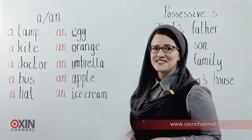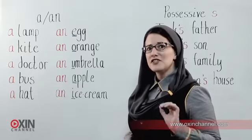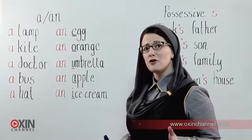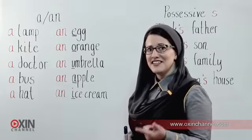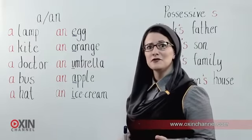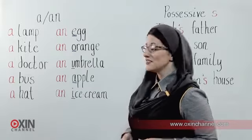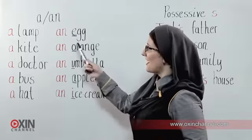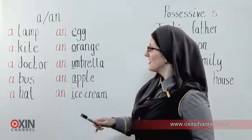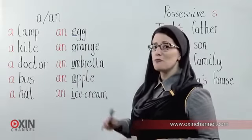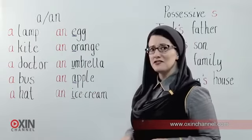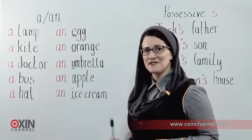A hat. We use 'an' for words that begin with a vowel: A, E, I, O, or U. So, an egg, an orange, an umbrella, an apple, and an ice cream.